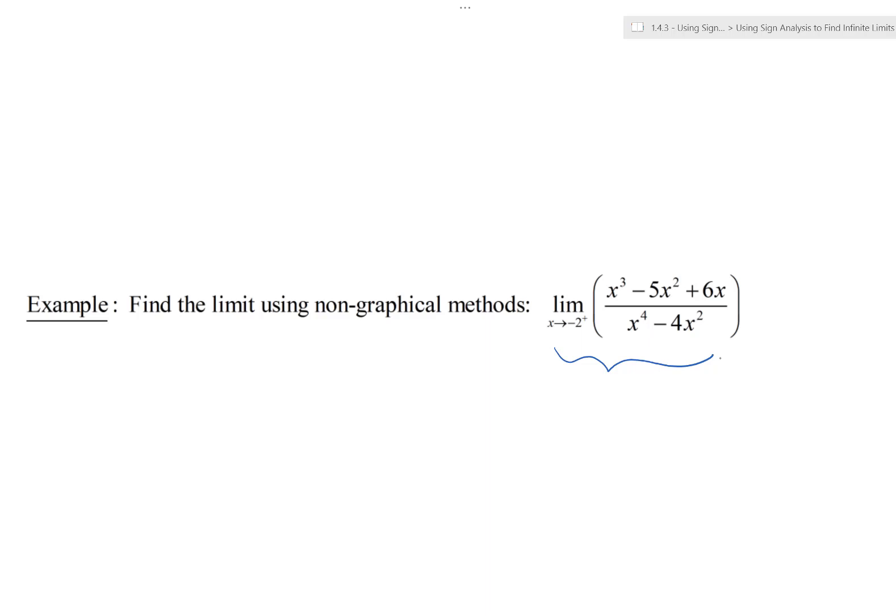Those are the only possible locations for sign changes. So given this rational function, when is it zero? That's when the numerator equals zero. When is it undefined? That's when the denominator equals zero. We want to find all the zeros of both numerator and denominator, and ideally find the full factorization of the rational function.